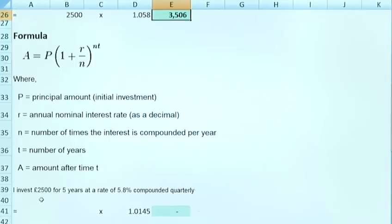So in this example I'm going to invest my two and a half thousand pounds for five years at the same rate of 5.8% but I'm going to compound quarterly, so four times through the year.